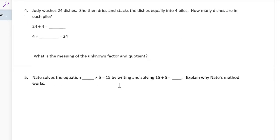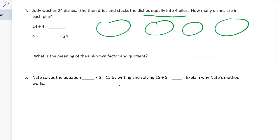Problem 4, next page, top of the next page, second page. Judy washes 24 dishes. She then dries and stacks the dishes equally into 4 piles. How many dishes are in each pile? So we've got 24 dishes. We know there's 4 piles. 1, 2, 3, 4.